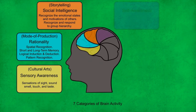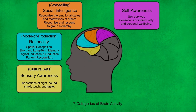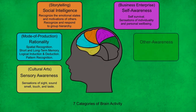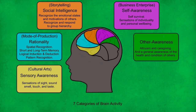Next we have the neurochemical processes associated with self-awareness, which include an awareness of self-survival and sensations of individuality and personal well-being — manifesting as business enterprise. At the opposite extreme, we have the areas of the brain associated with other awareness. These neurochemical processes include sensations of altruism and caregiving, and a general awareness of the health and condition of others. These brain processes manifest as all the nurturing and welfare practices and institutions of human populations — from childcare to schools to healthcare centres and hospitals.